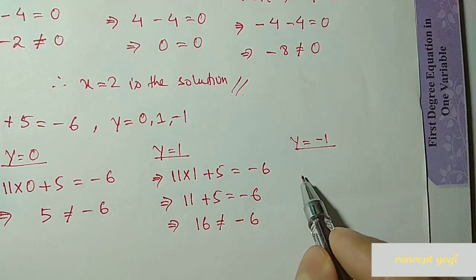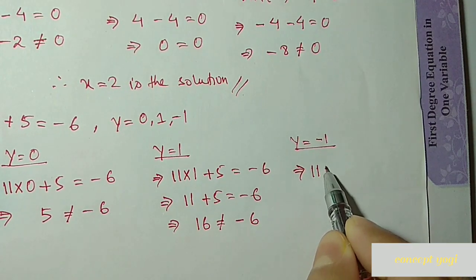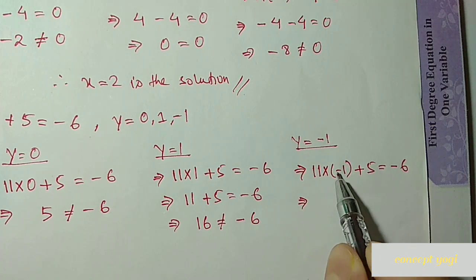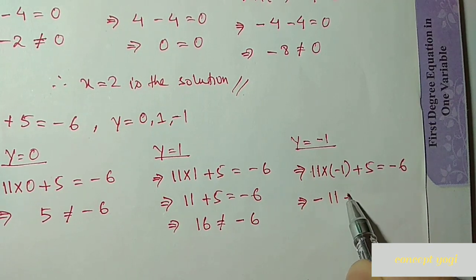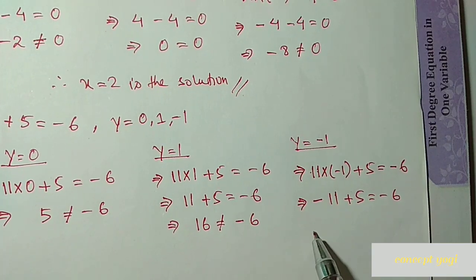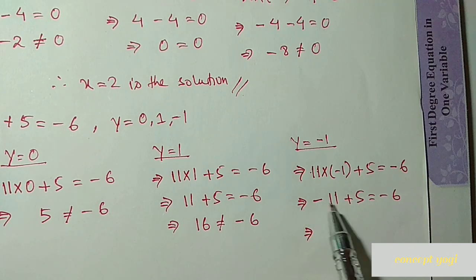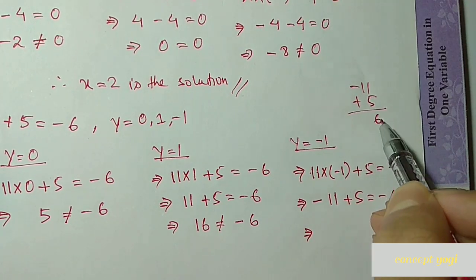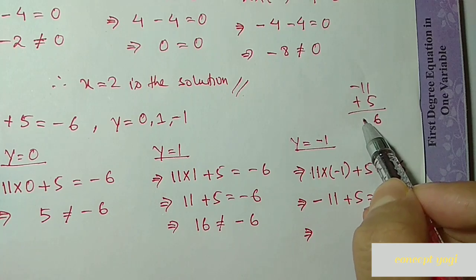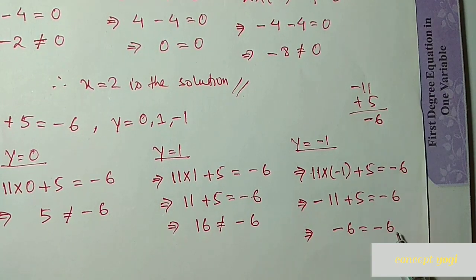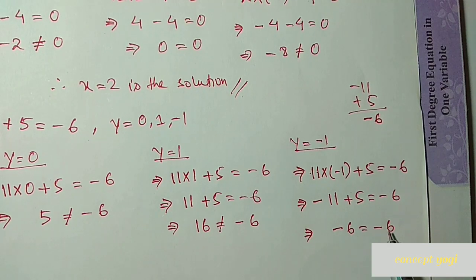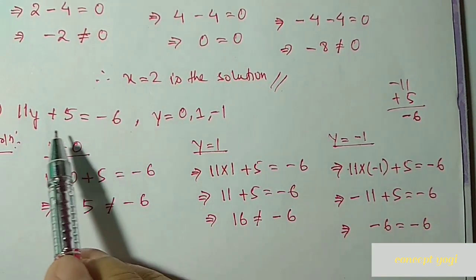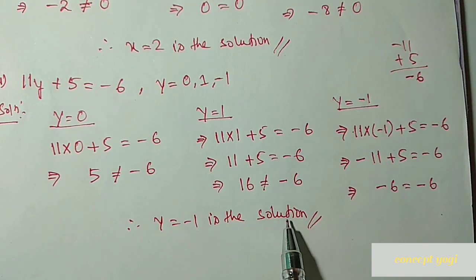Next we put y equal to minus 1: 11 into minus 1 plus 5 equal to minus 6. That gives minus 11 plus 5. Since 11 is greater and has a minus sign, 11 minus 5 gives 6 with a minus sign — so minus 6. Left hand side is minus 6 and right hand side is also minus 6 — they are equal. So y equal to minus 1 is the solution of this equation.